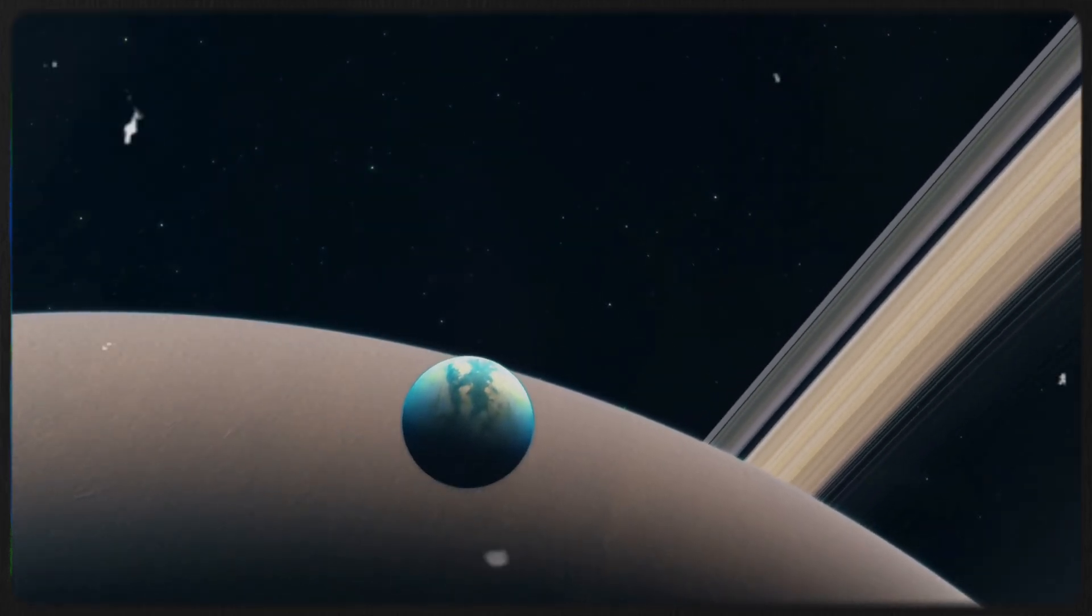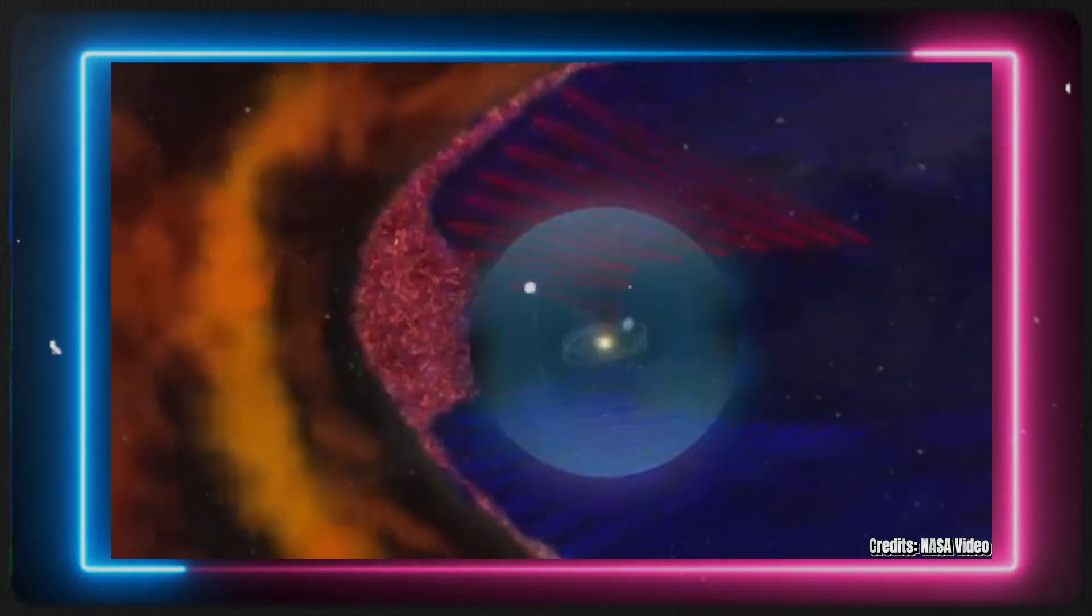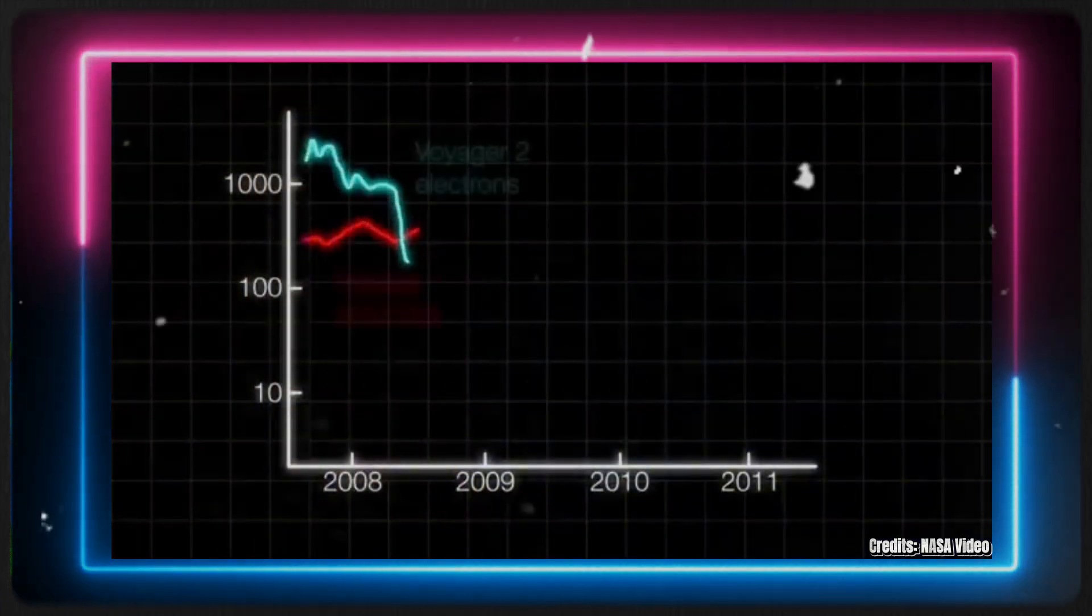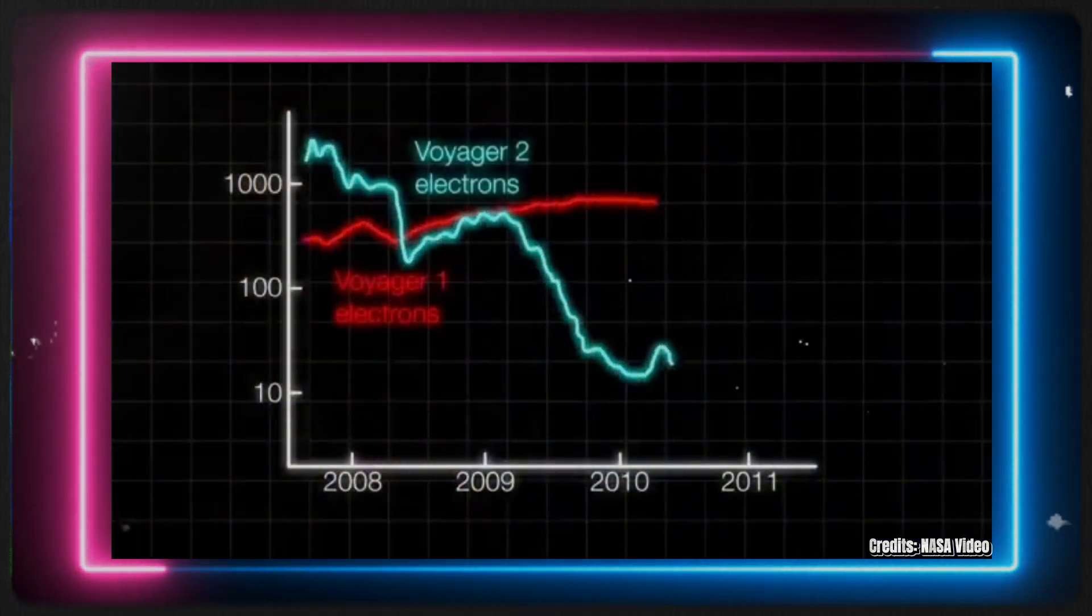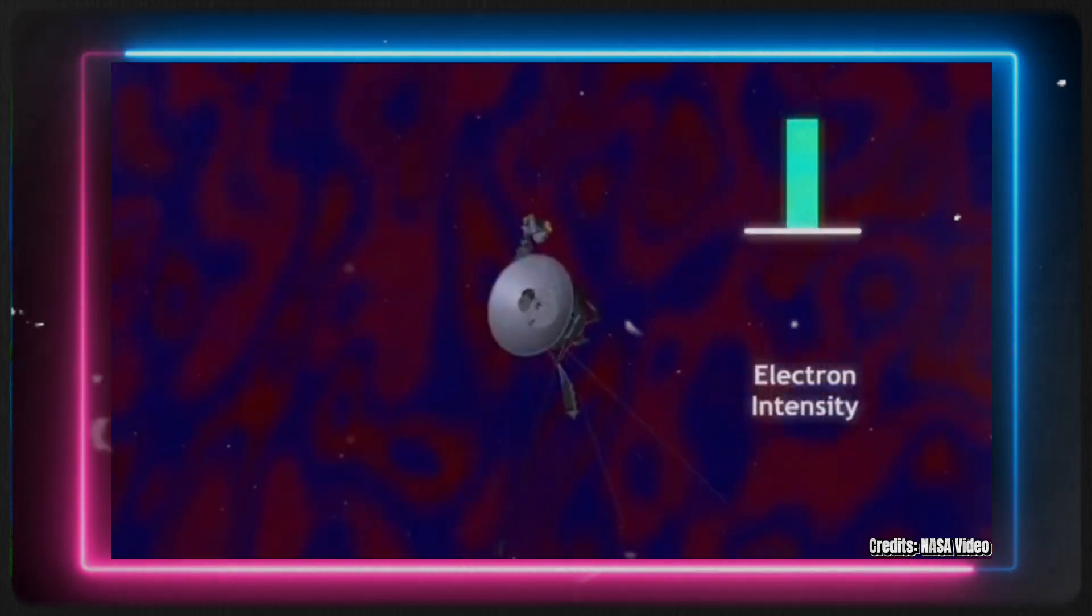After gathering critical data at Saturn, Voyager 1 veered off course to explore the heliosphere, while Voyager 2 continued its journey towards the outermost planets in our solar system. Both spacecraft have not only answered numerous questions about the vastness of space, but have also posed new ones.